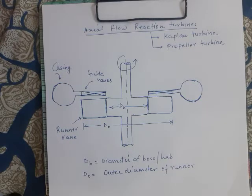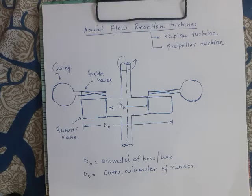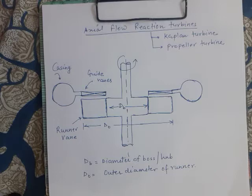There are two types of axial flow reaction turbines: the Kaplan turbine and the propeller turbine. Both fall under the category of axial flow reaction turbines, but there is a slight difference. The Kaplan turbine is fitted with adjustable runner vanes, while the propeller turbine has runner vanes that are rigidly attached to the rotor. In the Kaplan turbine the runner vanes are adjustable in position.